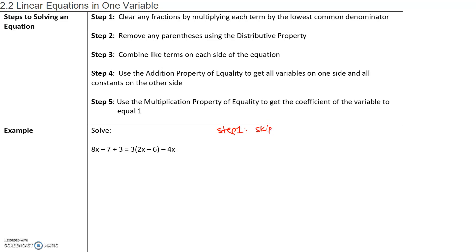Step two: remove any parentheses using the distributive property. Now we do have parentheses. The distributive property states that any parentheses that has a coefficient in front of or at the end of the parentheses, we will multiply each term in the parentheses by that coefficient. It's very important that at each step we rewrite the problem performing whatever step we're on, so we will only perform distribution.